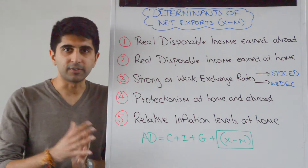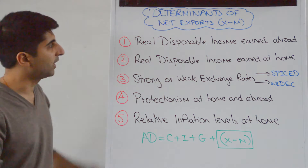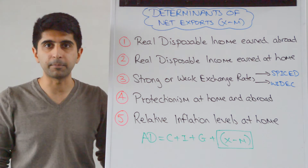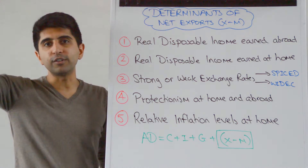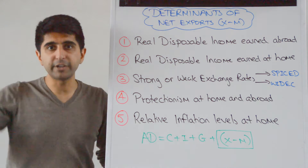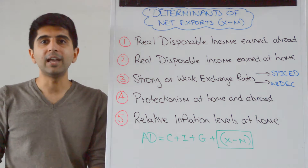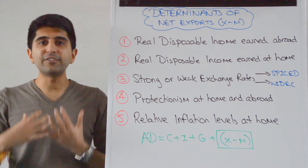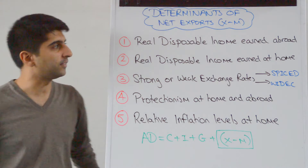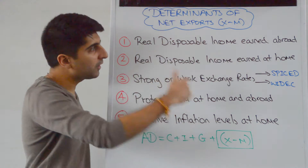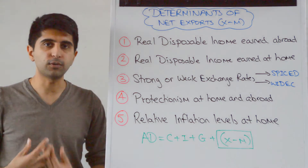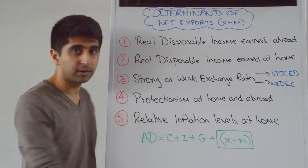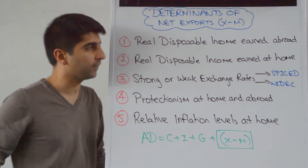What factors can influence the level of net exports in the economy? Well, real disposable income earned abroad. If there is a boom abroad, then folks abroad are getting richer, their marginal propensity to import goods is likely to increase, which means that for a domestic country like the UK, the demand for exports is likely to increase. So if there is higher income abroad, demand for exports is likely to increase, which is going to increase export revenues, ceteris paribus, and therefore shift aggregate demand to the right by increasing X minus M.